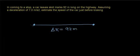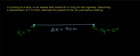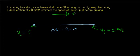Our question is: what is the initial velocity of this driver? We don't know what it is. We know that the driver is going to lock up their brakes and eventually come to a stop, so the final velocity is going to be 0 meters per second. The driver slows down and comes to a stop. The car is moving in what we'll call the positive x direction.